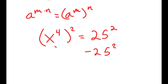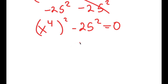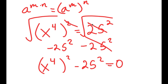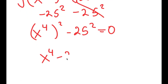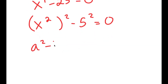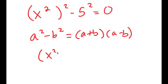I'm going to subtract 25 squared from both sides, so those cancel, giving x to the power of 4 to the power of 2 minus 25 to the power of 2 equals 0. Taking the square root of both sides cancels the exponent of 2, giving x to the power of 4 minus 25 equals 0. I'll rewrite this as x squared to the power of 2 minus 5 squared equals 0, then apply the difference of squares formula: a squared minus b squared equals a plus b times a minus b. This gives x squared plus 5 times x squared minus 5 equals 0.